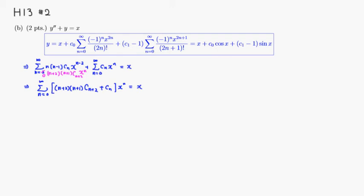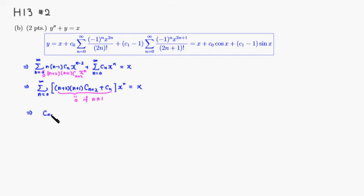We know that all terms are equal to 0 except when n equals 1, where we need to get x instead of 0. So for n not equal to 1, we get the recurrence relation: cn plus 2 equals negative 1 over (n plus 2)(n plus 1) times cn.